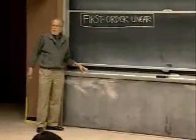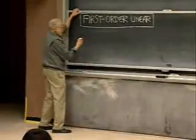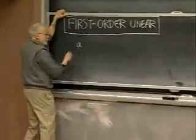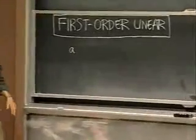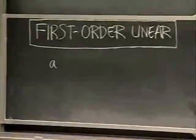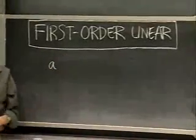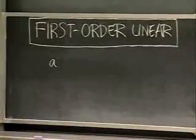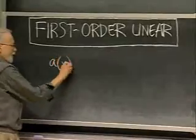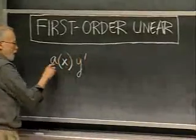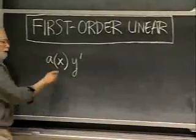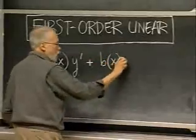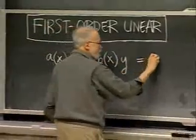What does such an equation look like? I'll write it in the most basic form. I'm going to use x as the independent variable because that's what your book does, but in applications it's often t for time that's the independent variable. The equation looks like this: some function of x times y prime, plus some other function of x times y, is equal to yet another function of x.